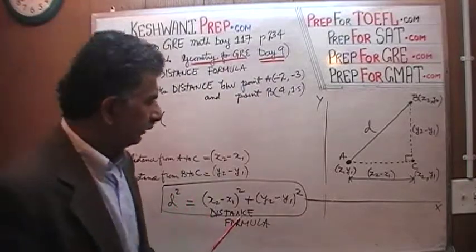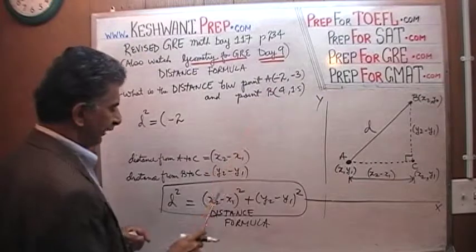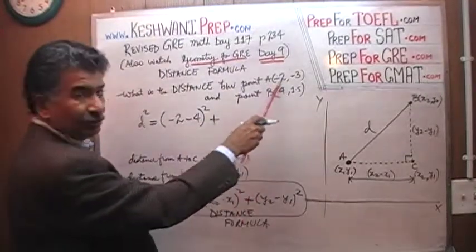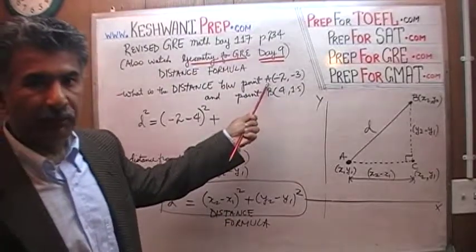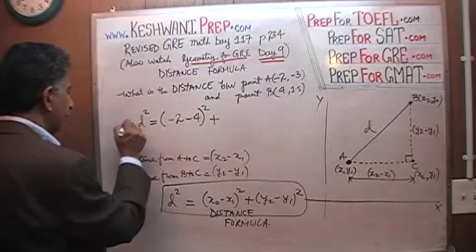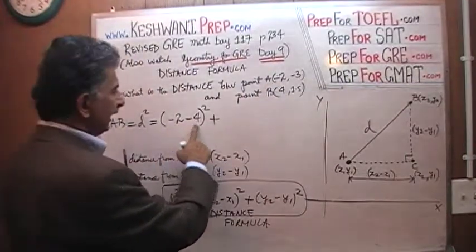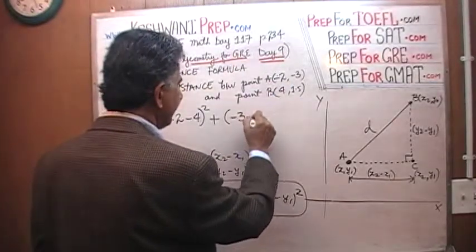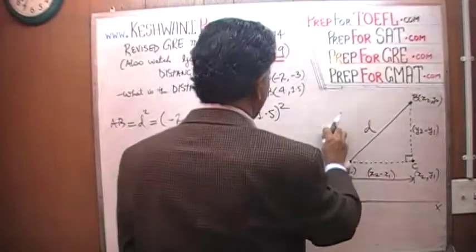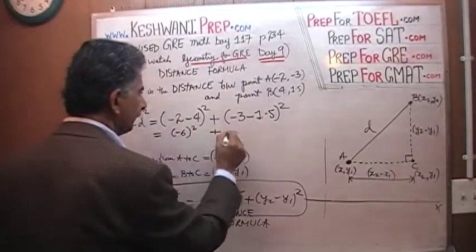Why doesn't it matter? If we treat negative 2 as our x2, then it's x2 minus x1 squared. We're measuring distance from A to B — negative 2 to 4. So D squared equals (negative 2 minus 4) squared plus (negative 3 minus 1.5) squared, which boils down to negative 6 squared plus negative 4.5 squared.